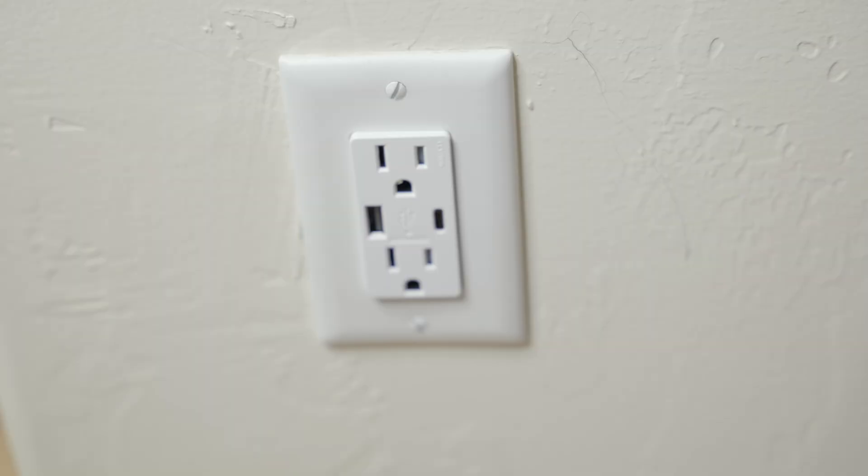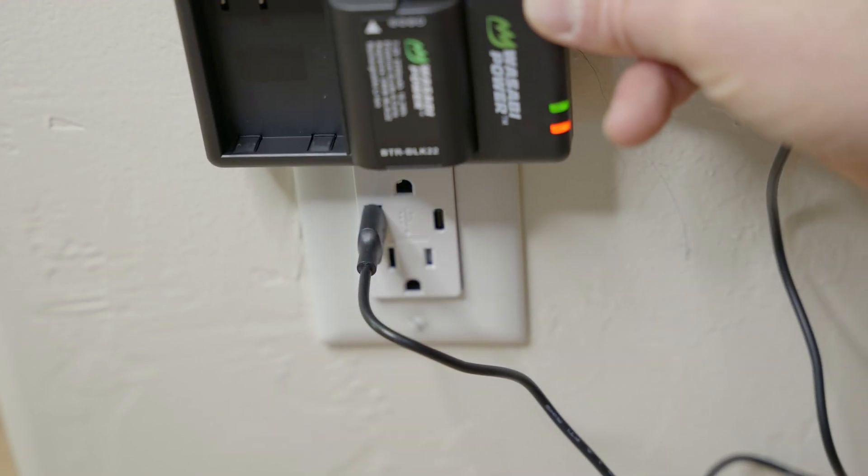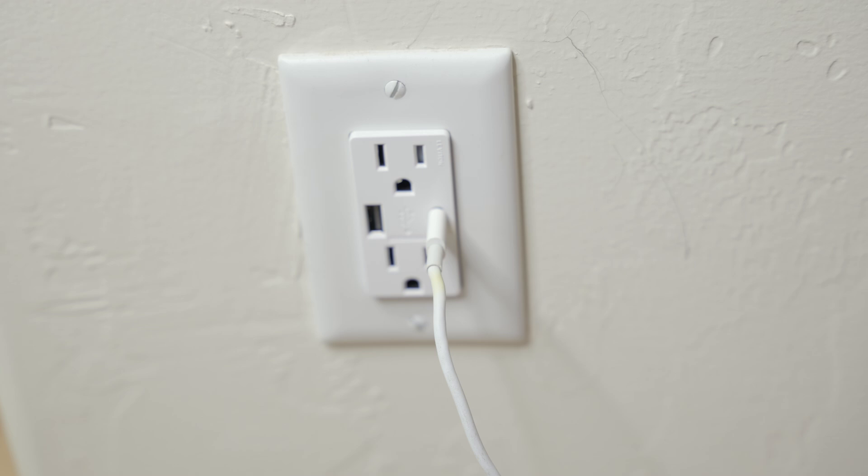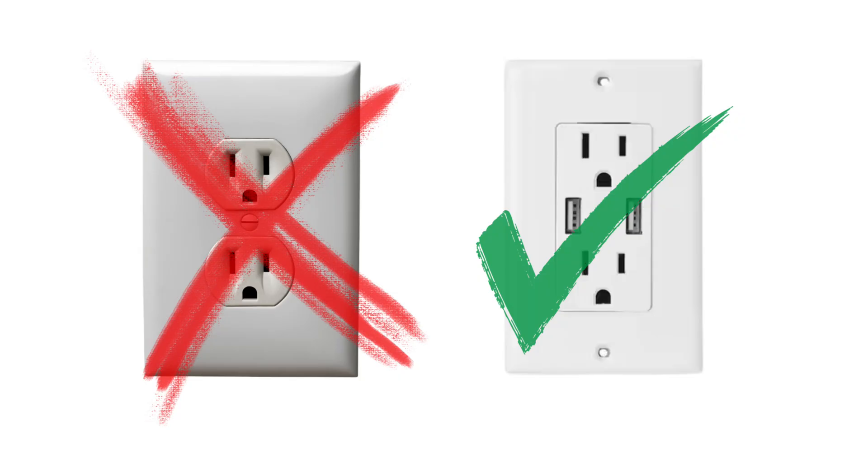And of course we need to check the USB plugs. So first let's check the standard plug there. You can see my battery charger is on. And then of course we'll check it with the USB-C type side. So we have successfully upgraded our old boring wall outlet with this new USB dual port charger.